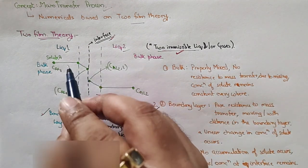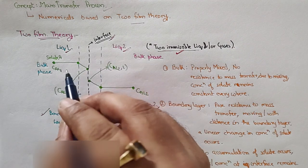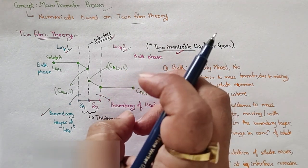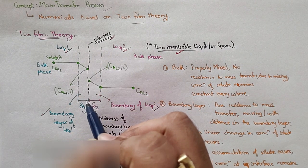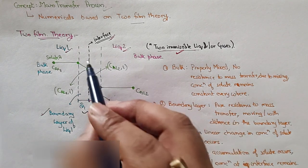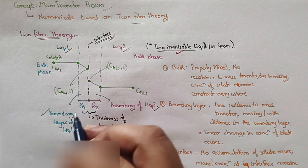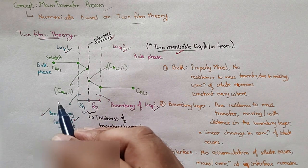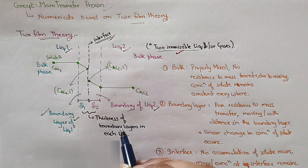In this diagram, consider there are two liquids — liquid one and liquid two — both immiscible in nature. For example, liquid one is water and liquid two is oil; if you put them in a beaker they form two separate layers. When they form two separate layers, there is a boundary or interface separating them. According to Two Film Theory, along this interface, boundary layers form on either side — the boundary layer of liquid one and the boundary layer of liquid two.